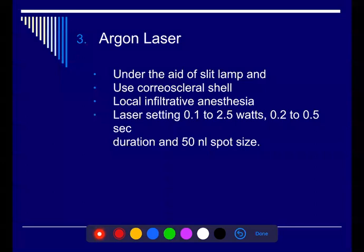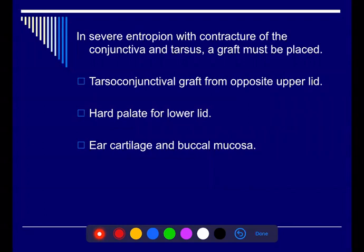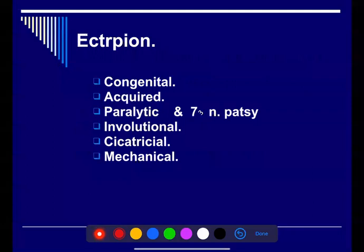If there is severe entropion with contraction of the conjunctiva and tarsus, then a graft must be considered. We can use the graft from the opposite upper lid or from the hard palate. For the lower lid, we can use hard palate, ear cartilage, or buccal mucosa. These are most of the procedures we do for entropion.